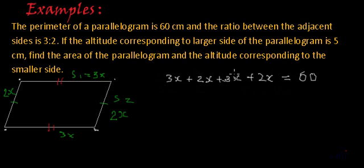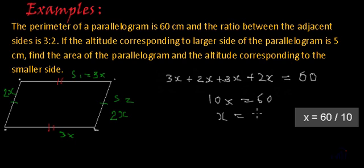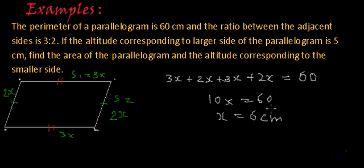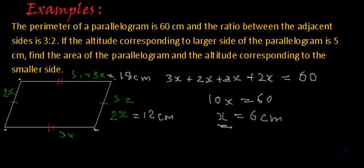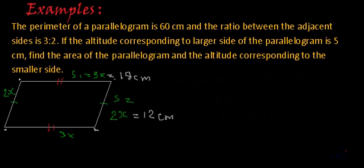So we have one equation. Adding all the like terms on the left-hand side: 3 plus 2 is 5, plus 3 is 8, plus 2 gives us 10x equals 60. So x equals 6 centimeters. If x is 6, then 3x equals 18 centimeters and 2x equals 12 centimeters. So we have found the lengths of the sides of the parallelogram — the longer sides are 18 centimeters and the shorter sides are 12 centimeters.